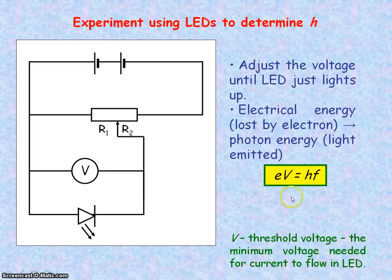We're saying this electrical energy is converted into the photon energy, which is h, Planck's constant, times the frequency of the light that is emitted.